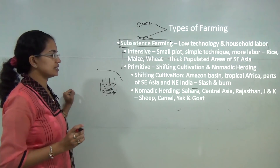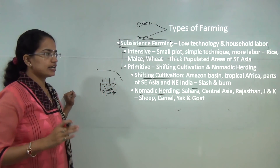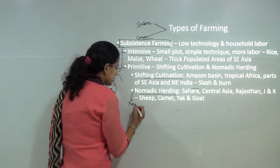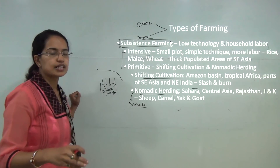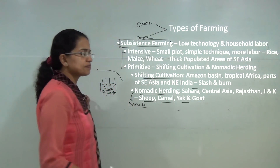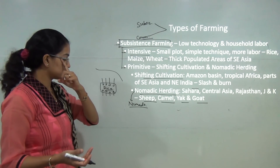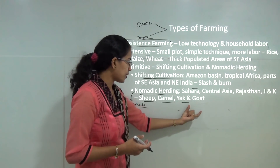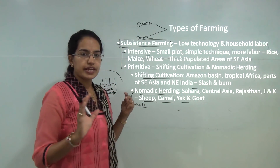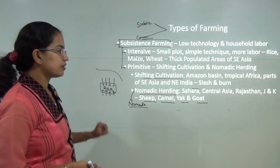Primitive subsistence farming is further classified as either shifting cultivation or nomadic herding. Nomadic herding is common in desert areas, where people are nomads who move from place to place without a permanent home. They keep animals like sheep, camel, yak, and goat, using products such as milk, wool, and hide for leather. It is primarily found in desert areas or hilly terrain — examples include the Sahara, Central Asia, Rajasthan, and Ladakh in Jammu Kashmir, where yak is a predominant animal.